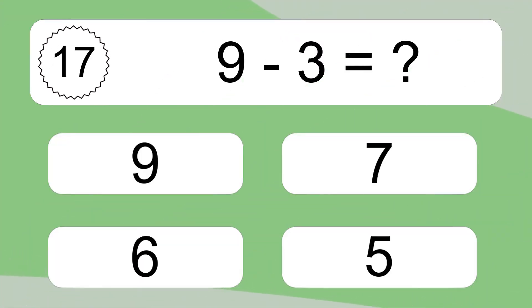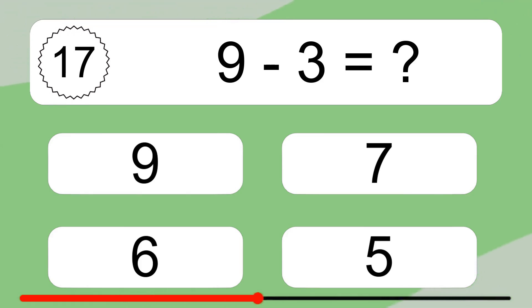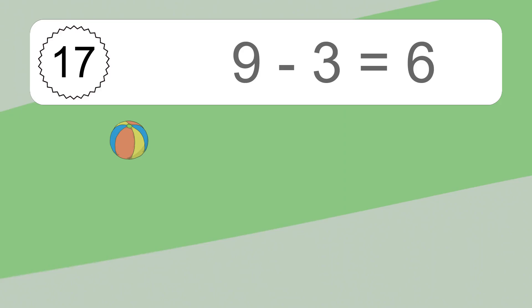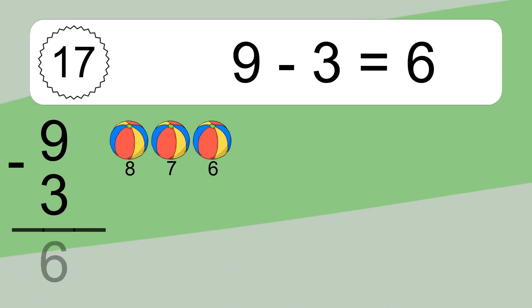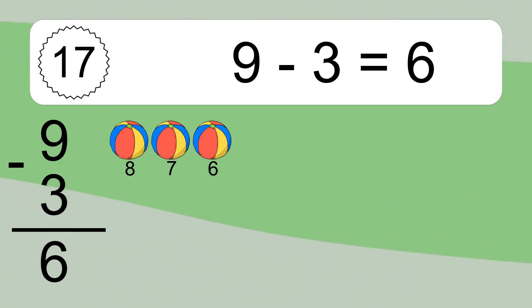9 minus 3 equals what? 9 minus 3 equals 6. Let's count it. 8, 7, 6.